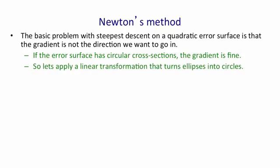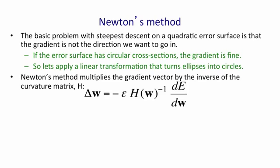So the idea of Newton's method is to apply a linear transformation that turns ellipses into circles. If we apply that transformation to the gradient vector, it will be as if we were going downhill in a circular error surface. To do this, we need to multiply the gradient, dE by dW, by the inverse of the curvature matrix. So H is the curvature matrix, sometimes called the Hessian. It's a function of the weights we have. And we need to take its inverse and multiply the gradient by that. Then we need to go some distance in that direction.